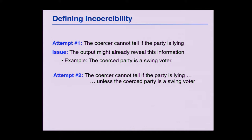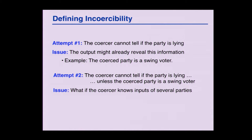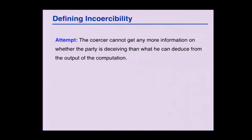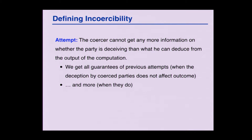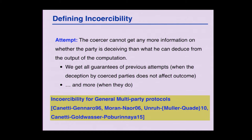Second attempt: assume the party is not a swing voter. This is actually the notion of incoercibility used in the context of receipt-free voting. It has some meaning, but as cryptographers, we know it's not just about this one party's input and output. The coercer might know more inputs from other parties, and by that he can deduce whether the coerced party cheated or not. So the final attempt is: we want that the coercer cannot tell that the coerced party is deceiving him by any means other than what he can deduce from the inputs and outputs of the function being computed. This approach has been taken in the literature for incoercibility for general functions — not just for voting — in a sequence of work by Canetti and Gennaro in '96, which was the first.